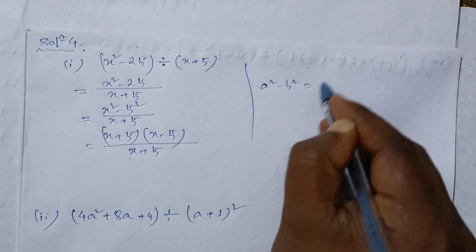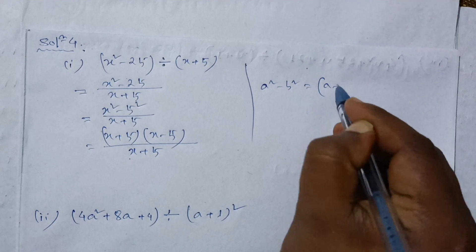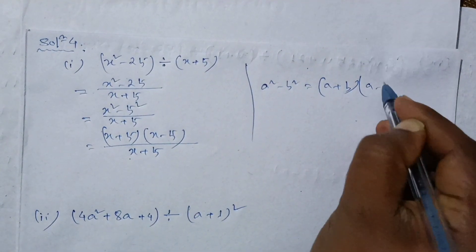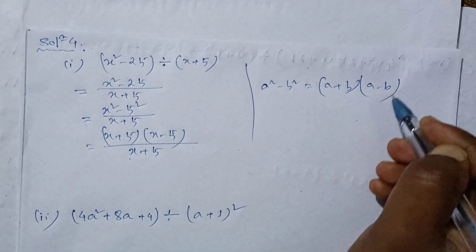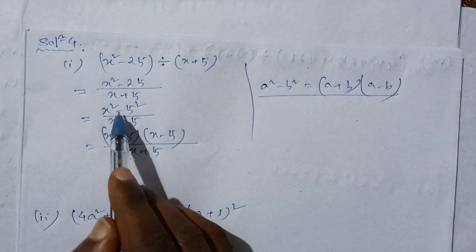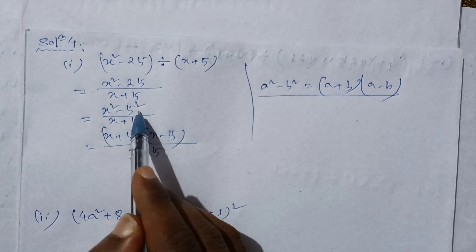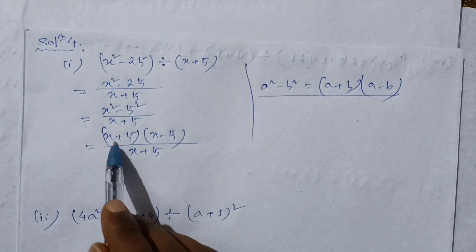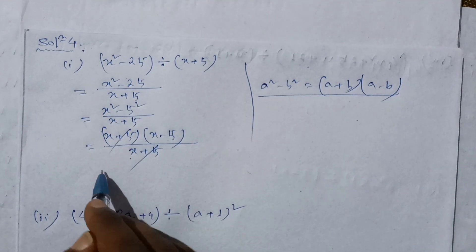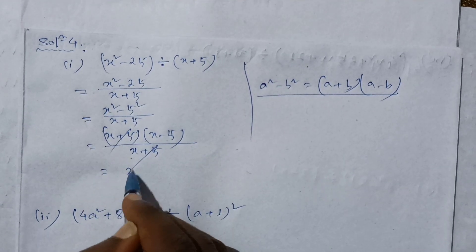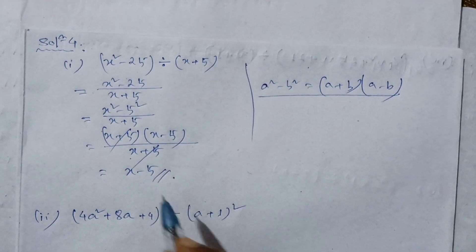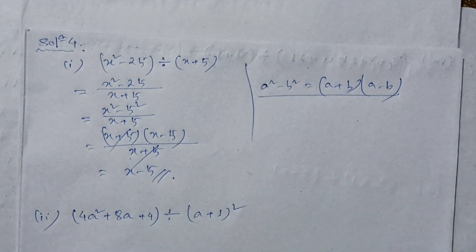Here we apply the identity: a plus b whole into a minus b. So x squared minus 25 equals x squared minus 5 squared, which factors as x plus 5 into x minus 5. The x plus 5 cancels, leaving x minus 5.